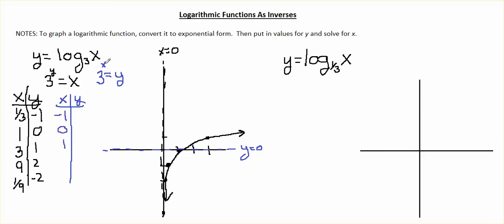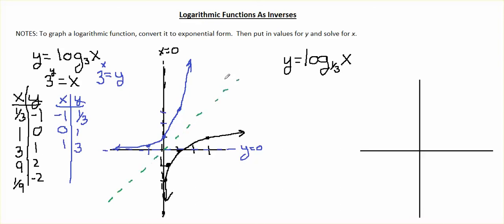If I plug in negative 1, I get 1/3. Plugging in 0 gives 1, and plugging in 1 gives 3. At negative 1 we're at 1/3, at 0 we're at 1, and at 1 we're up at 3. If we plot the line of symmetry for inverse functions — y = x — we can see that the exponential function and the logarithmic function are symmetric across this line. They are definitely inverses of each other.